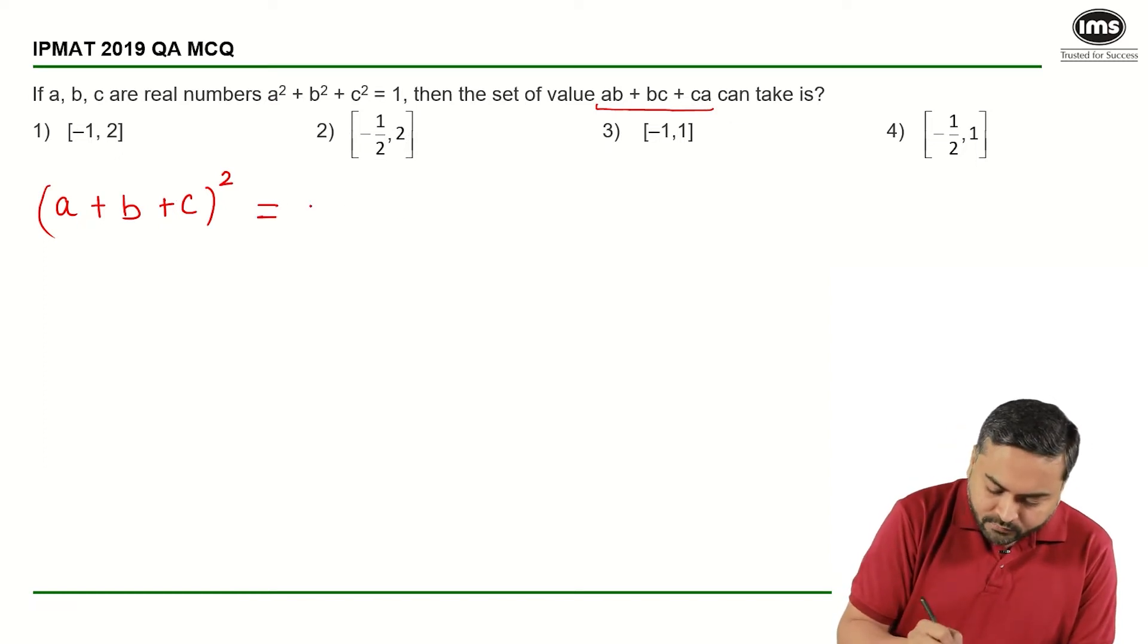What do I get here? I get A² + B² + C² + 2(AB + BC + CA).